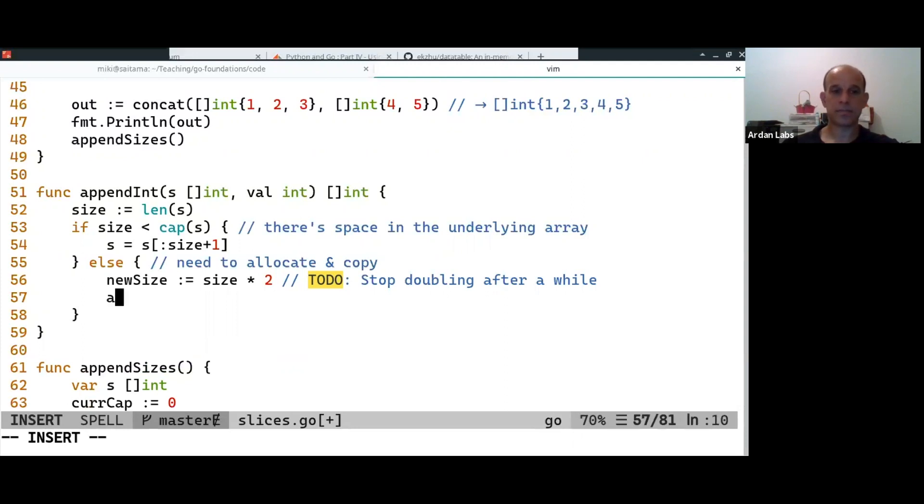And then I'm going to create an underlying array. So I'm going to use the new size. And I'm going to copy to the array the current slice. And say that the slice now looks at the array until size plus one.